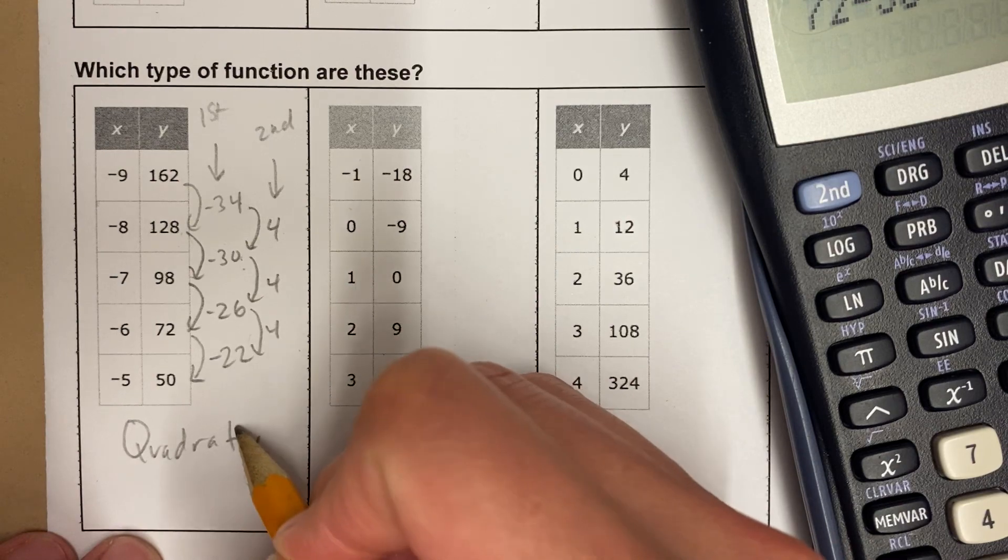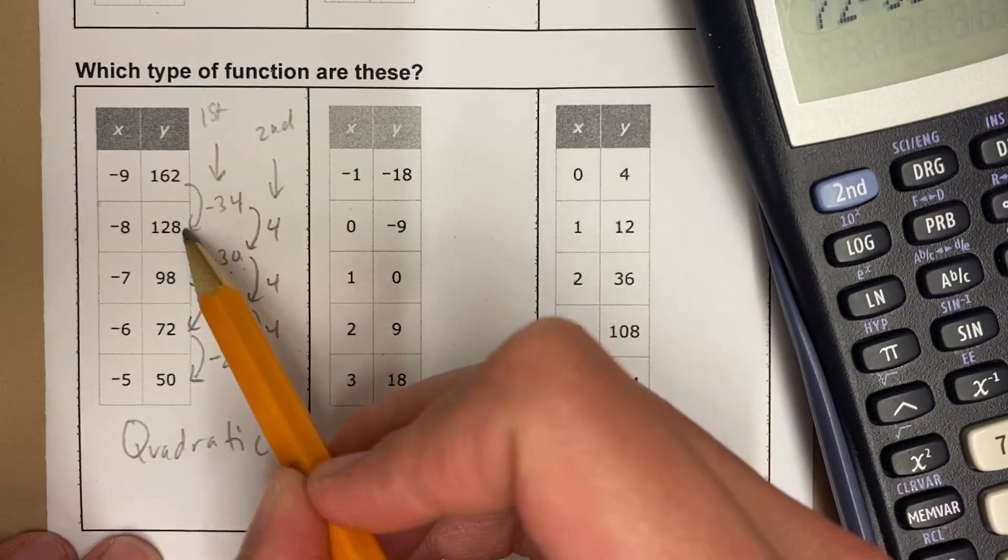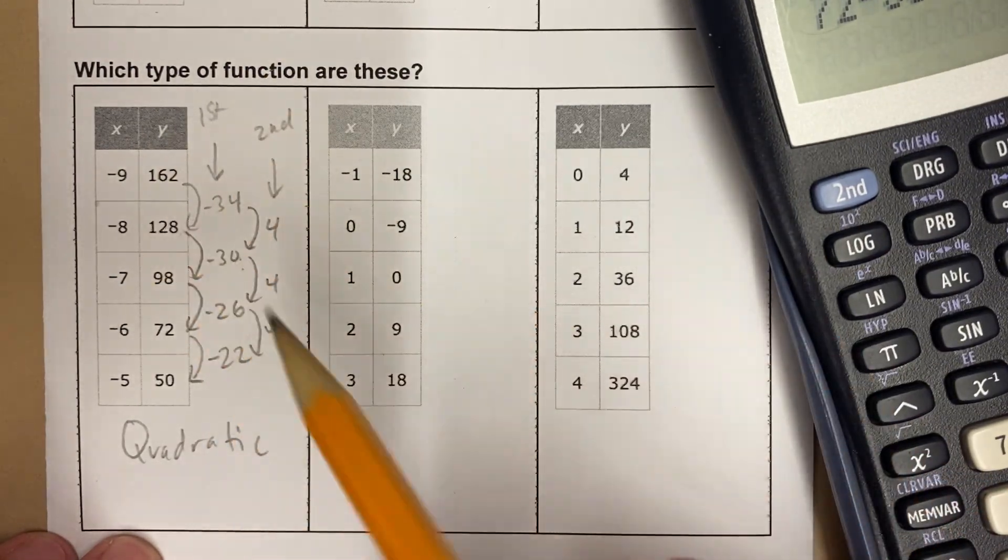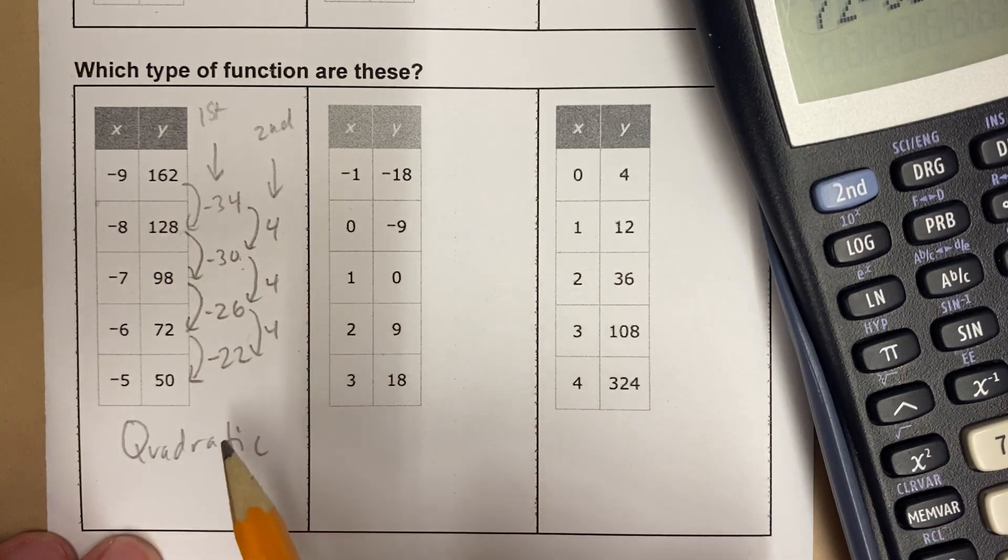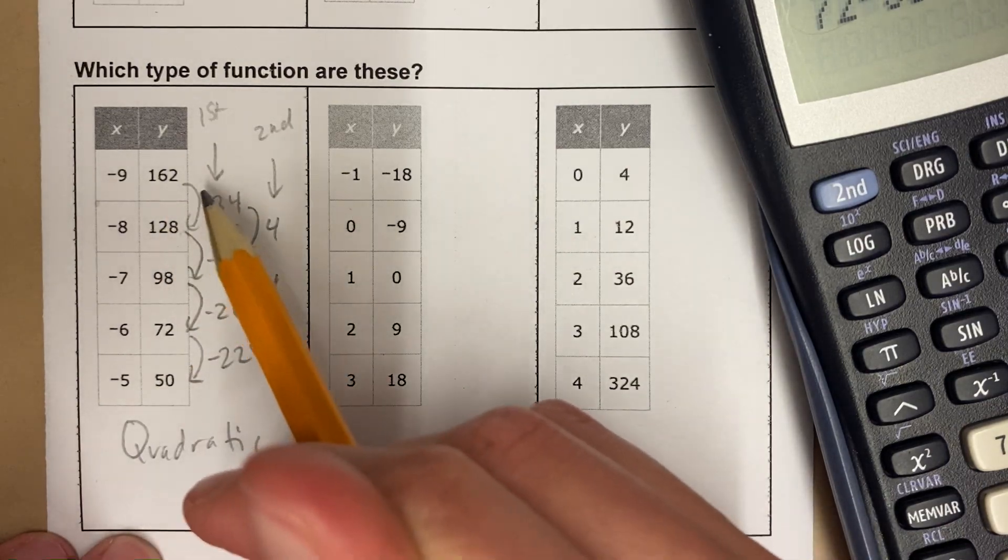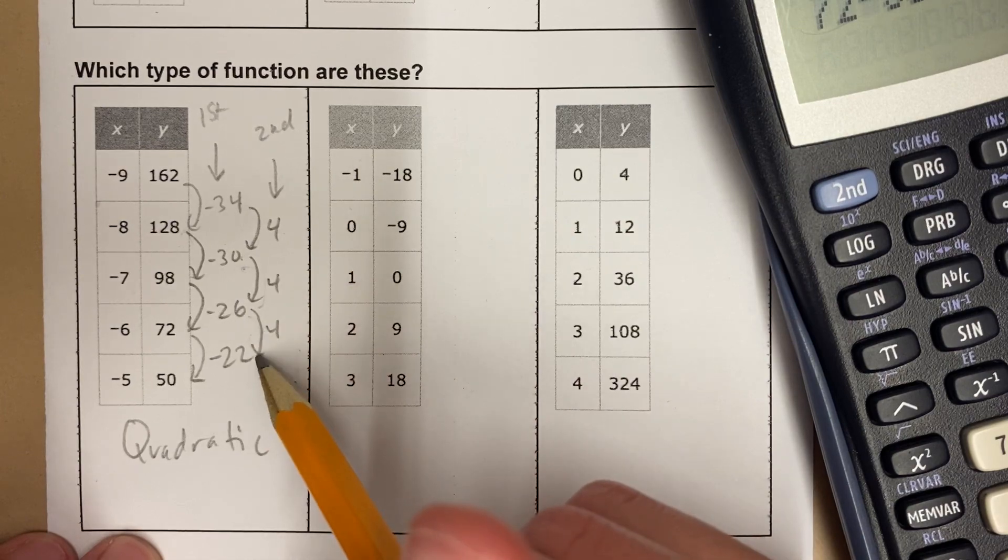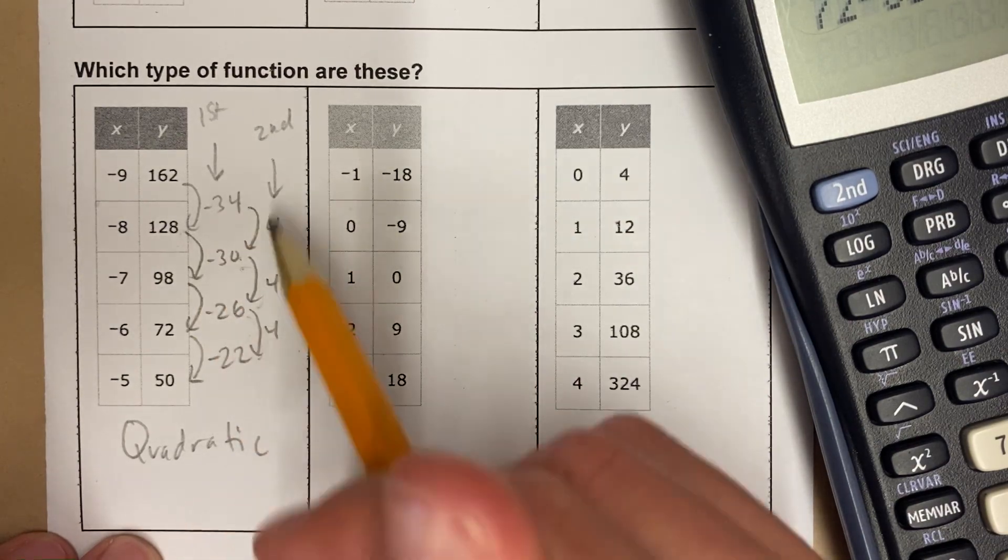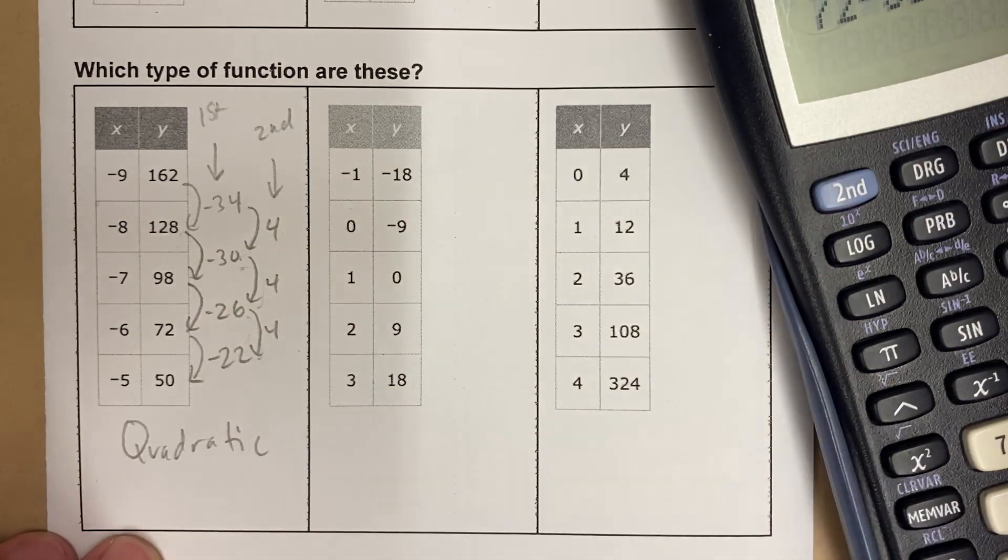Quadratic is the trickiest one to pick out, but I would say a good strategy with all of them is to start and check the first difference. Either you're going to notice it's linear, the first difference is the same, or you're going to notice it's not linear. I wonder if it's quadratic, and you can try the second difference. And if you don't notice that doesn't work, then it's probably exponential, and you should check for multiplying.